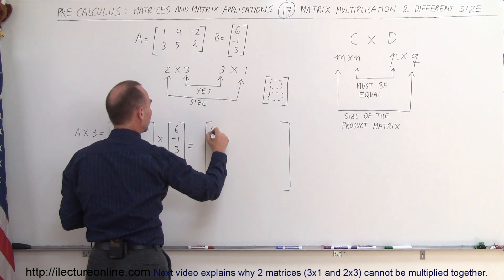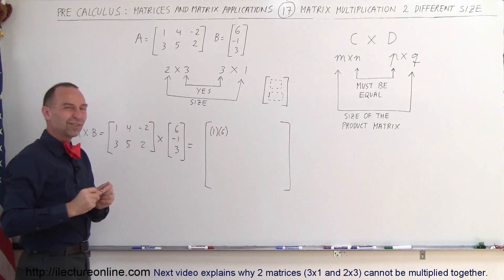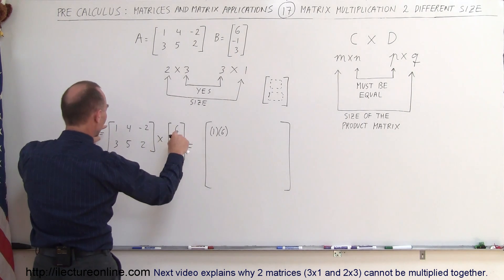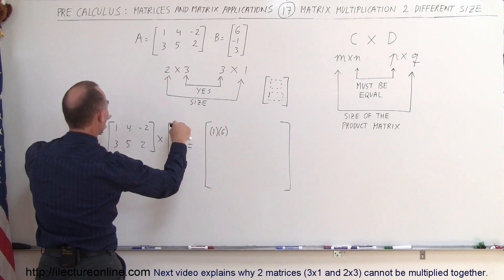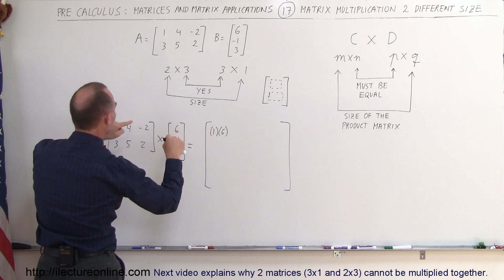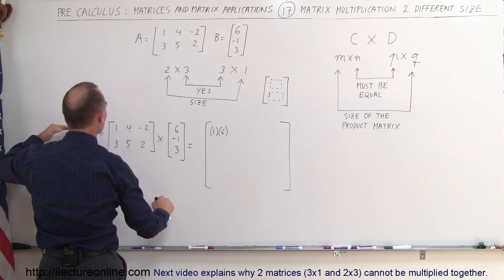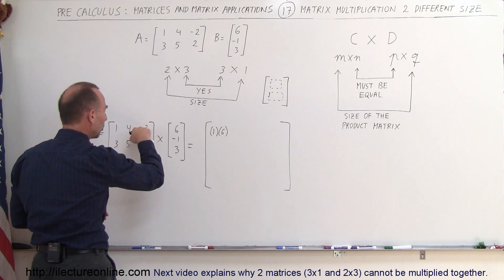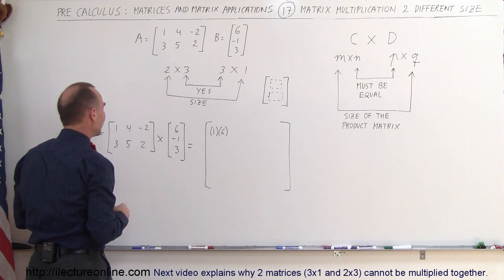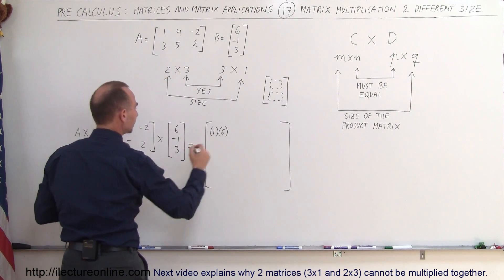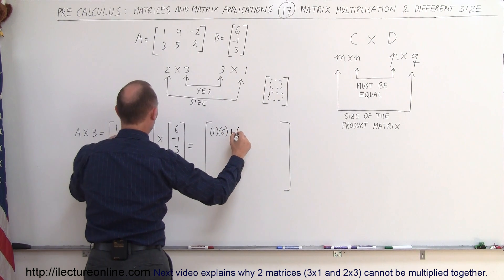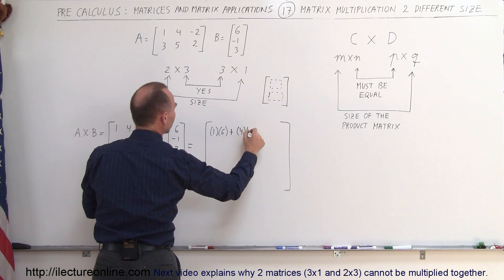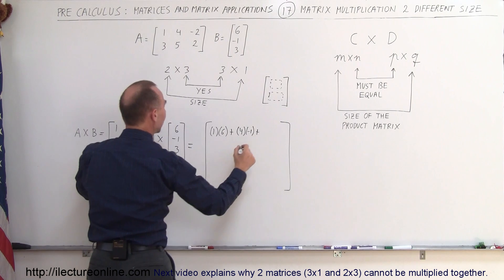We get 1 multiplied times 6, and again, sometimes it helps to do like this with your pencil or your fingers, you go 1 times 6 plus 4 times negative 1 plus negative 2 times 3. You move to the left with your left hand and down with your right hand along the row and along the column like that.